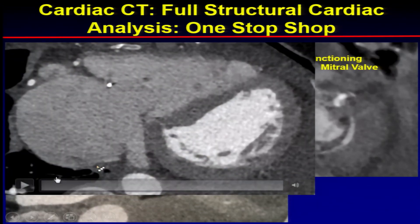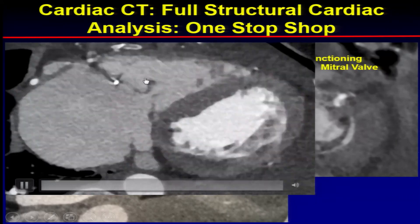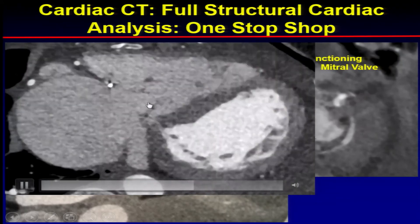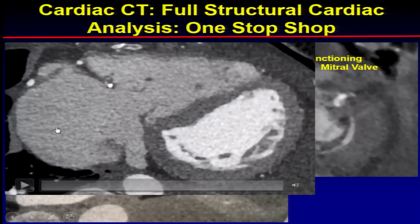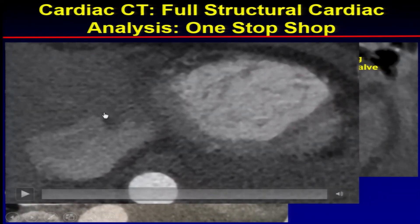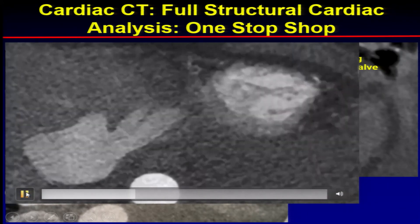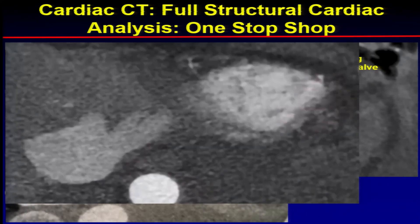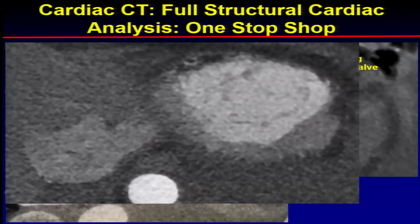We were also able to look at the right side of the heart. The tricuspid valve leaflets did not co-apt and the right atrium was extremely large, indicating tricuspid regurgitation. Just as with echocardiography, we look at the type of reflux, and you can see marked reflux of contrast into the hepatic veins, consistent with that diagnosis.